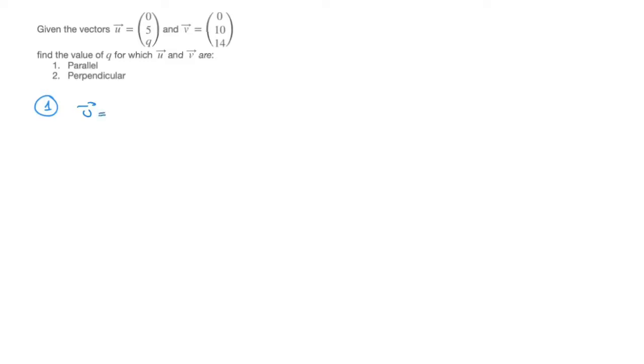such that u equals to k times the vector v. Writing u and v in their component form leads to the vector 0, 5, q equals to k times the vector 0, 10, 14. On the right-hand side here, this vector is being multiplied by k. Remember, when we multiply a vector by a number, we multiply each of its components by that number. So this equation turns into the vector 0, 5, q on the left-hand side, equals to the vector whose top component is k times 0, so that's just 0. Then k times 10, so that's 10k. And finally, k times 14, and that would be 14k.